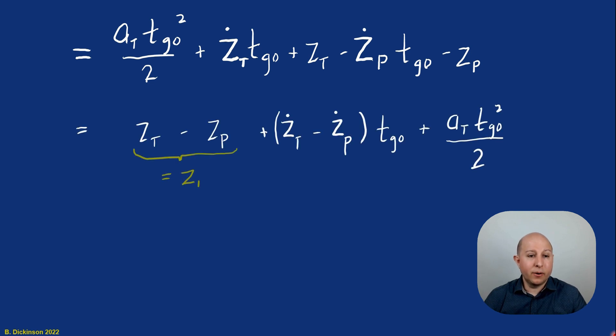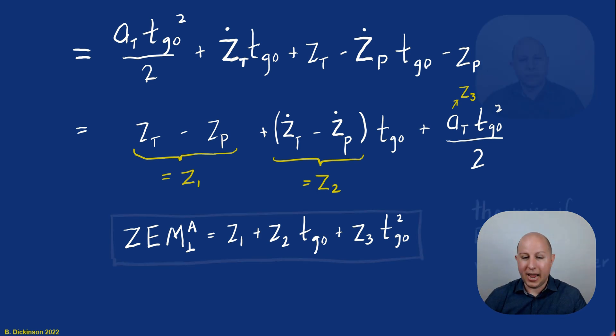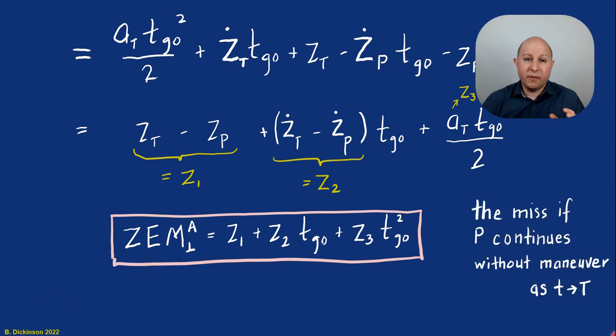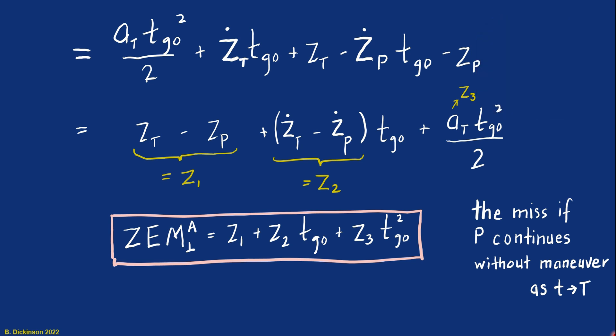So we take the integrals and notice that naturally, time to go appears. So now grouping things together, we can see we have z1, we have z2, and we have z3. And behold, z1 plus z2 time to go plus z3 time to go squared over 2, the thing in the braces in augmented pronav is actually also zero effort miss perpendicular to the line of sight direction for an accelerating target. And we've denoted that accelerating target with a superscript A here. Again, zero effort miss is the miss distance that results if the pursuer continues on its present heading at time, lowercase t, all the way to capital T.